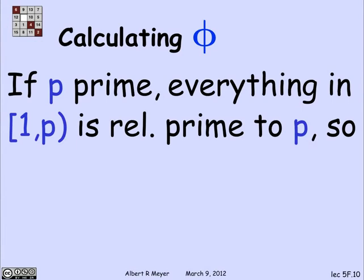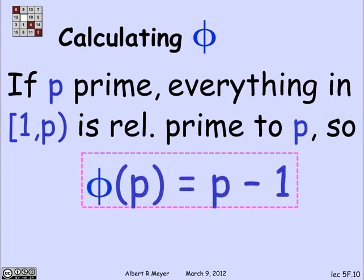A simple rule for calculating phi when p is prime, we've already indicated. Namely, every positive number less than p is relatively prime to p. And so phi of p is simply p minus 1.